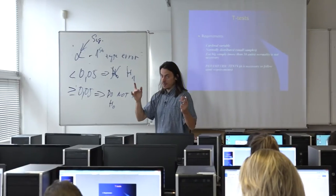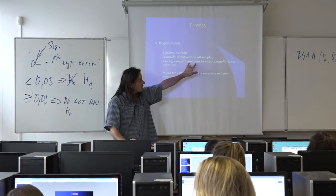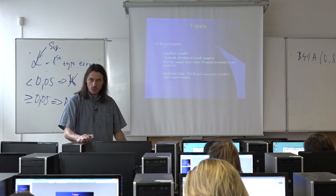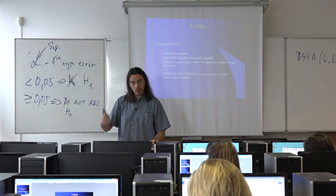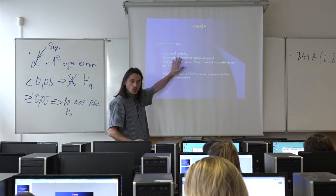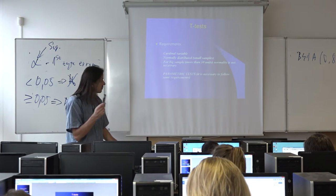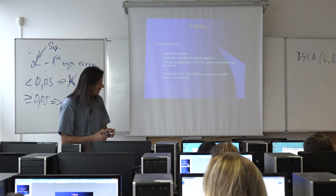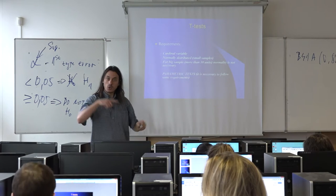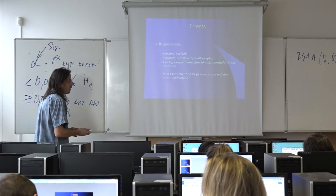However, if you have a big sample — and in statistics, big usually means more than 30 units — then normality is not necessary, because T-tests are considered robust. They can compute correctly even when the normality assumption is not met. If your data are small — fewer than 30 units — you should check for normal distribution, and if the variable is not normally distributed, you have to use other techniques, called non-parametric tests.